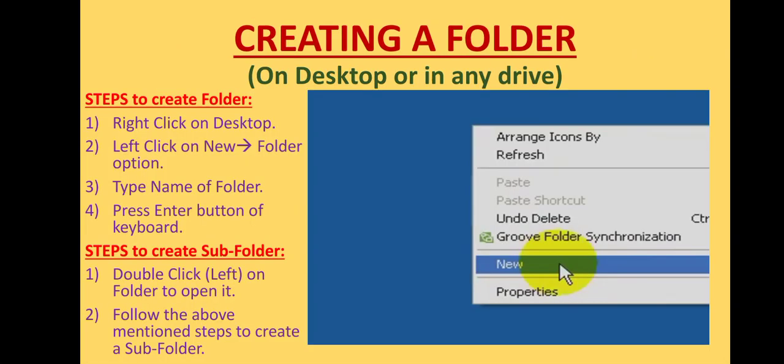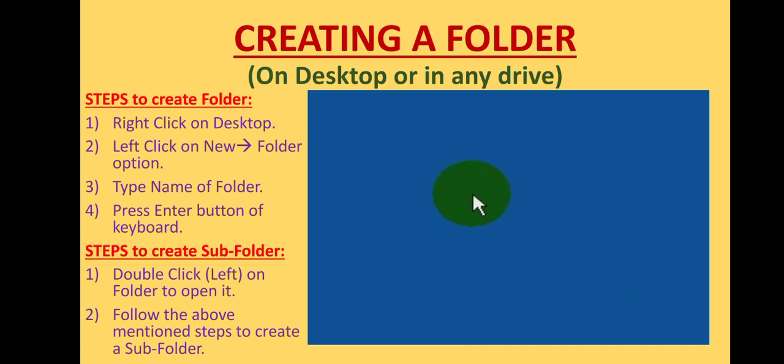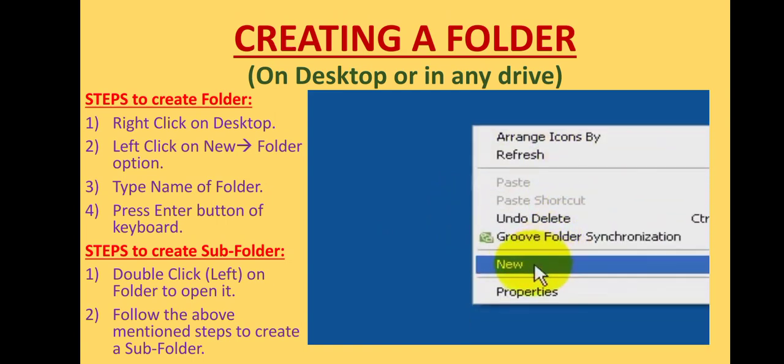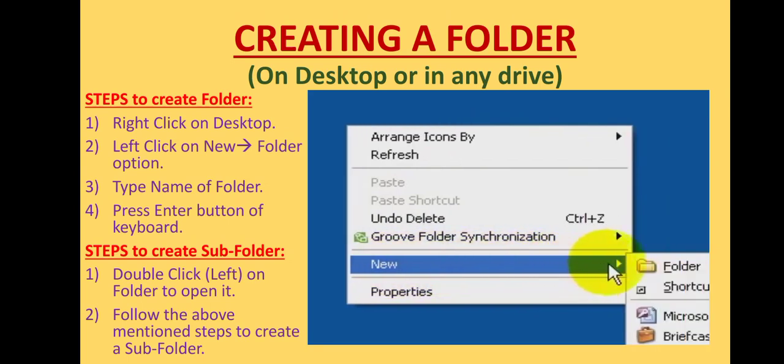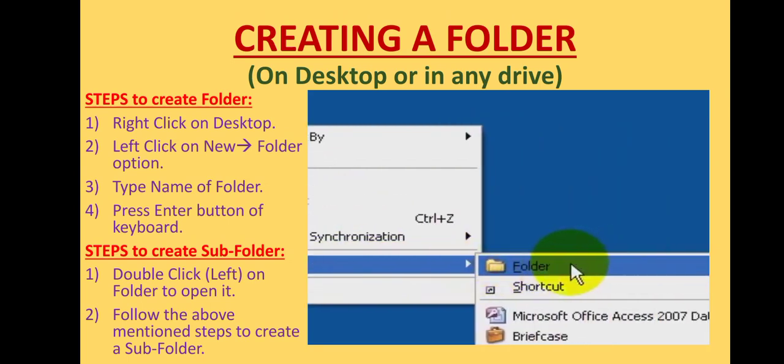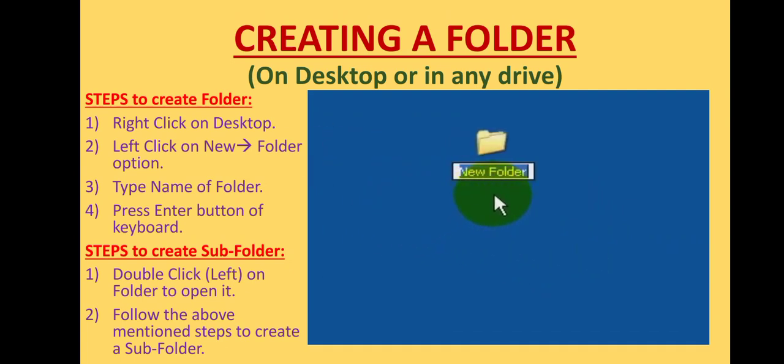Now it's time to know how to create a folder on desktop or in any other drive. Watch the video which will be played in the box to know about it. Right click anywhere on the desktop. Go to option new and slide over to the option new folder. Left click on it. See, the new folder is created with the default name which is highlighted.